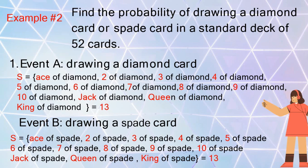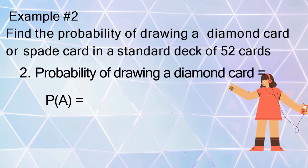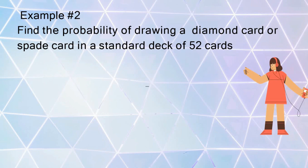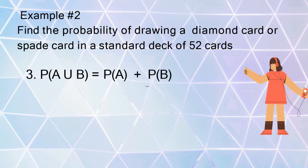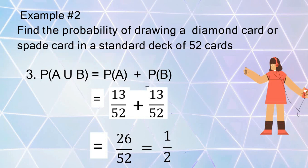The probability of drawing a diamond card, P(A), is 13/52, and the probability of drawing a spade card, P(B), is also 13/52. Since these events have no common outcomes, we use P(A∪B) = P(A) + P(B). Combining the numerators and keeping the common denominator gives 26/52, which simplifies to 1/2, or 0.5, or 50 percent.